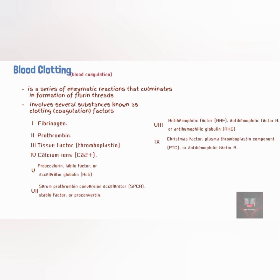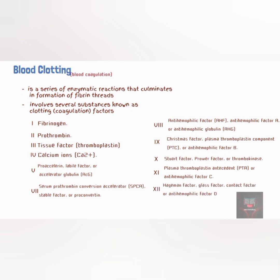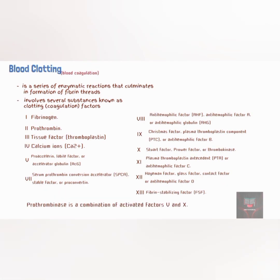Factor VIII is known as anti-hemophilic factor, anti-hemophilic factor A, anti-hemophilic proconvertin, or anti-hemophilic globulin. Factor IX is Christmas factor, plasma thromboplastin component (PTC), or anti-hemophilic factor B. Factor X is also called Stuart factor, Prower factor, or thrombokinase. Factor XI is plasma thromboplastin antecedent (PTA) or anti-hemophilic factor C. Factor XII is also known as Hageman factor, glass factor, contact factor, or anti-hemophilic factor D. Finally, Factor XIII is the fibrin stabilizing factor (FSF). There is no Factor VI, and the combination of Factor V and Factor X is also called prothrombinase or prothrombin activator.